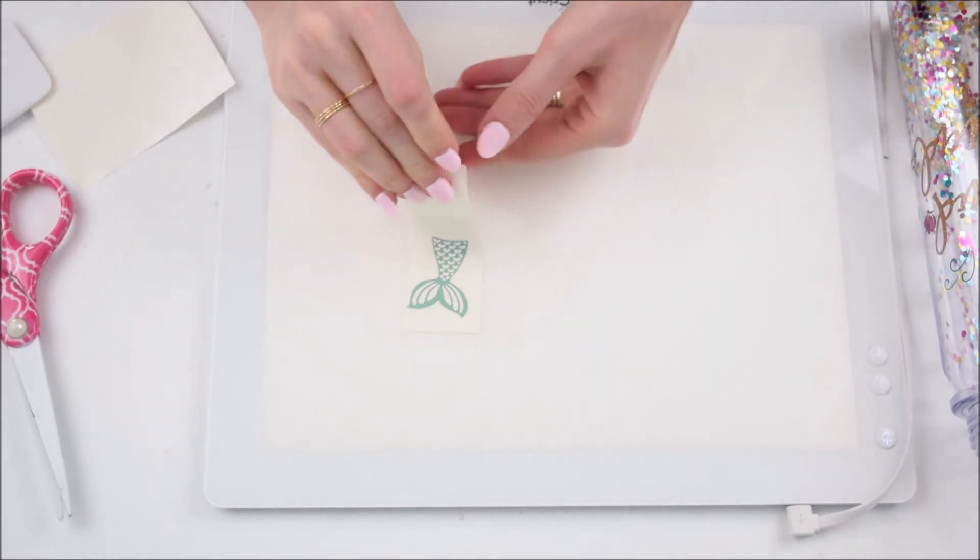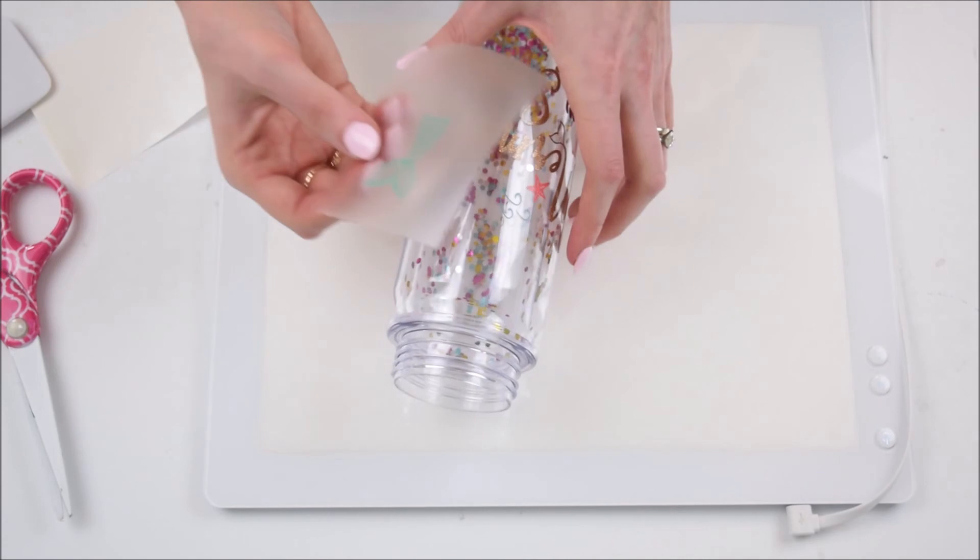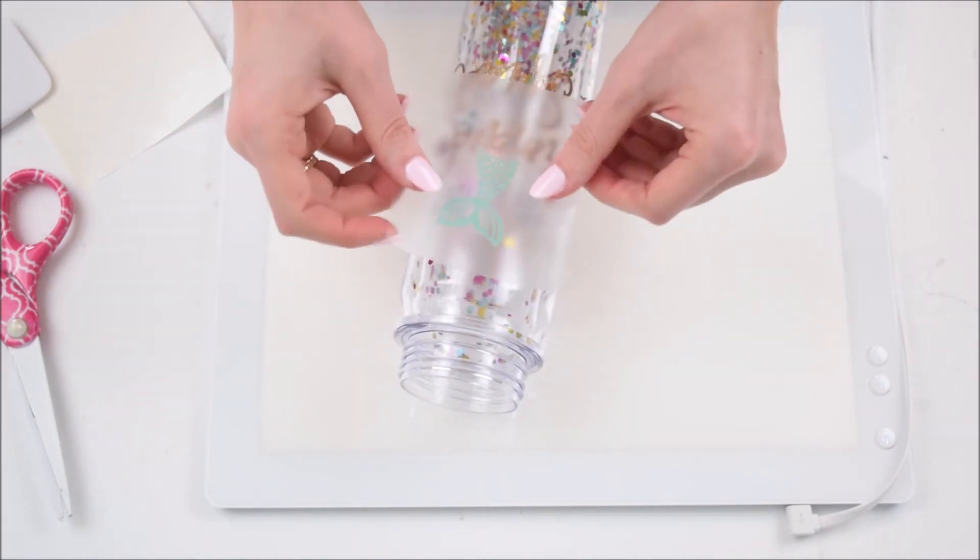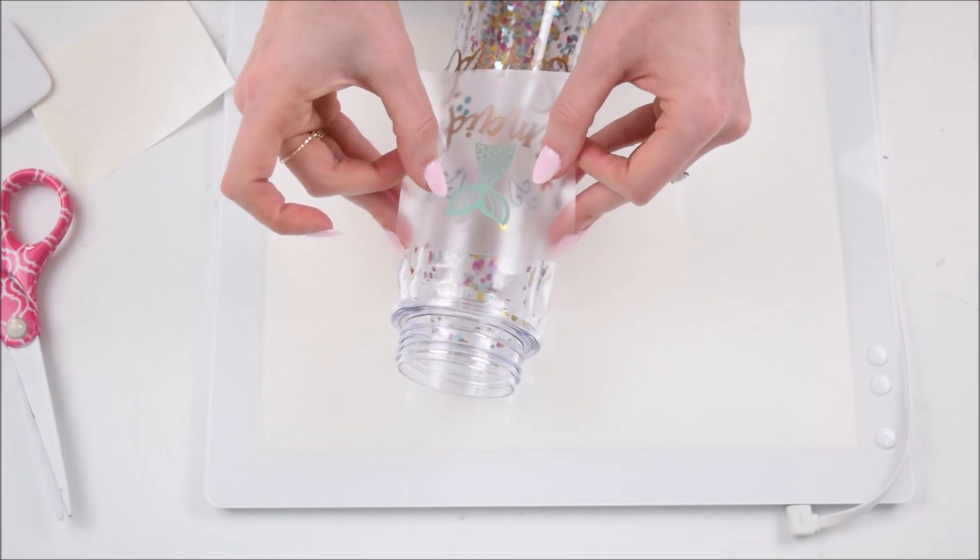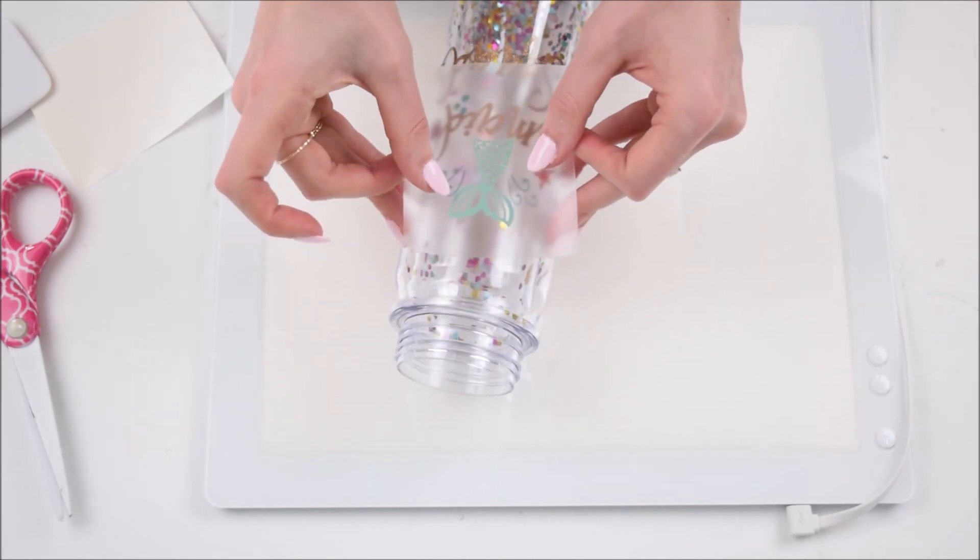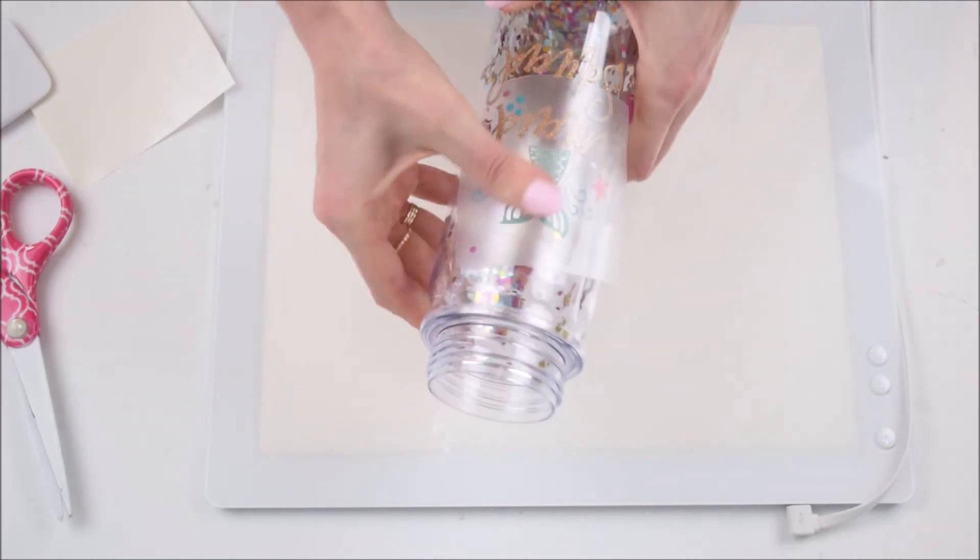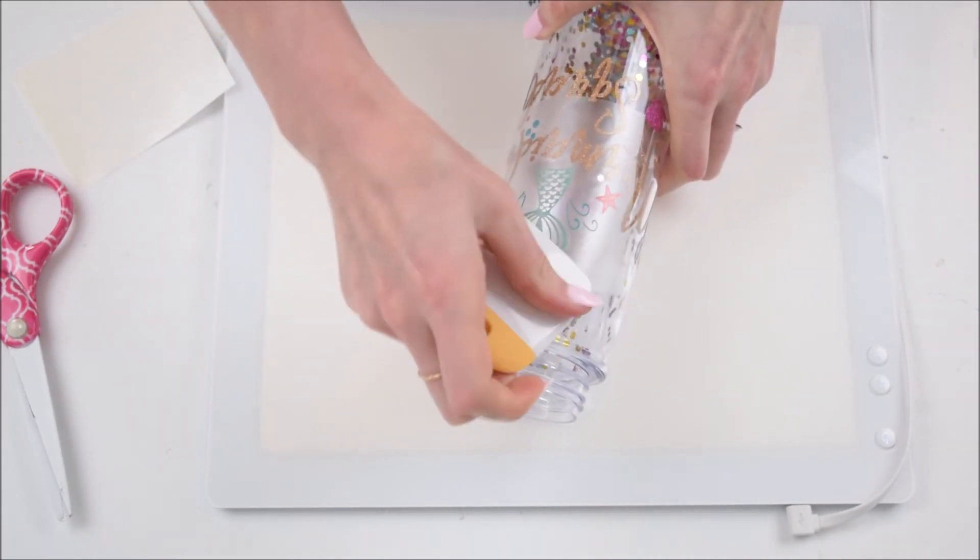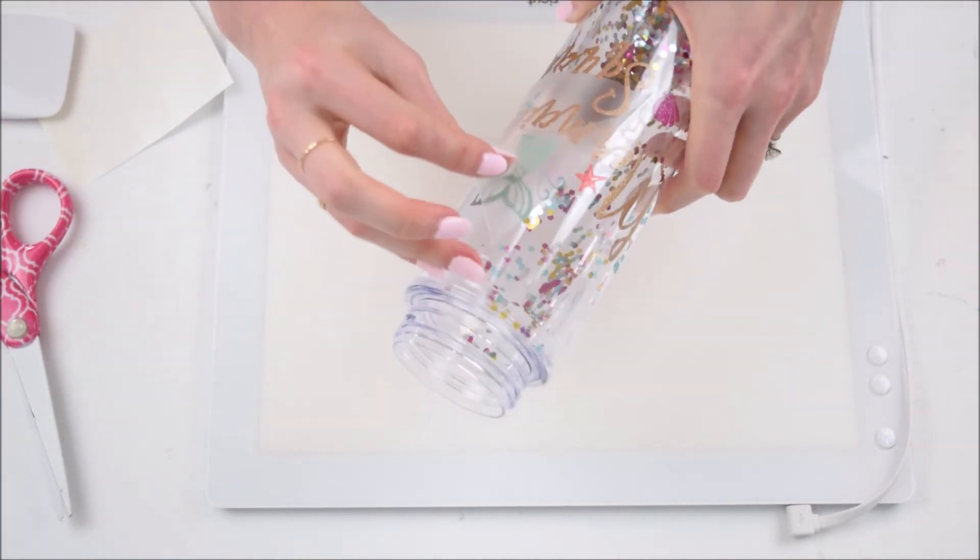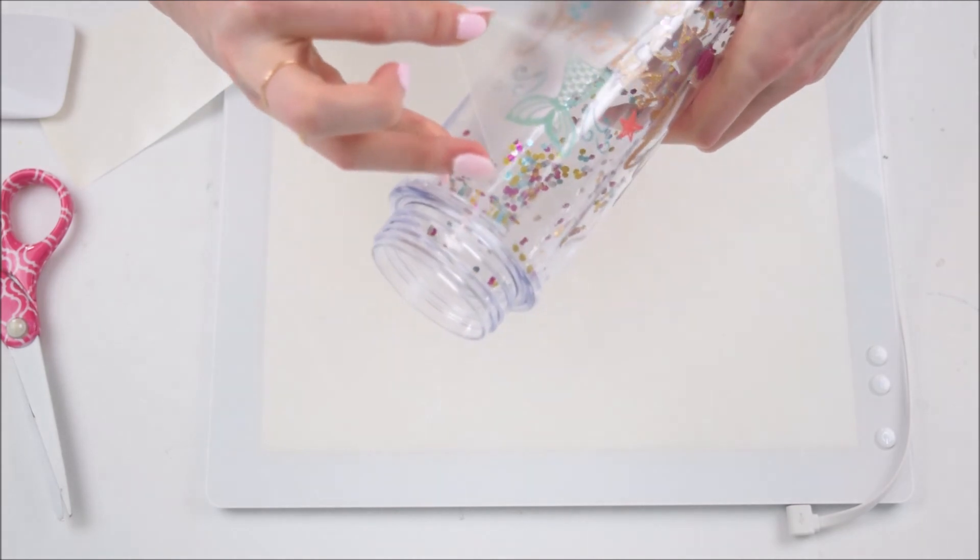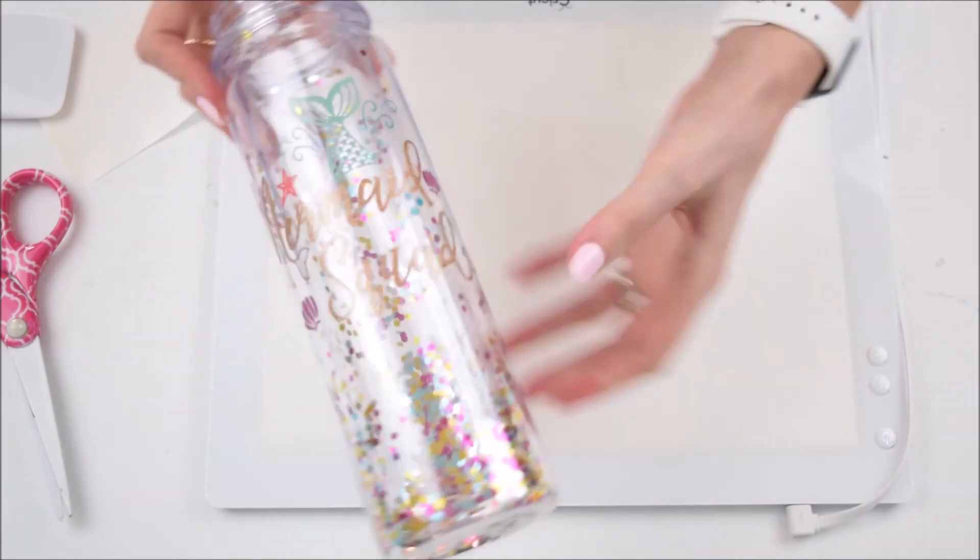The last piece here is the mermaid's tail so I'm going to get that transferred onto the tape and then place that at the top between the two little water splashes. Make sure you're pressing the design really good and burnishing onto the bottle before you lift the tape off.